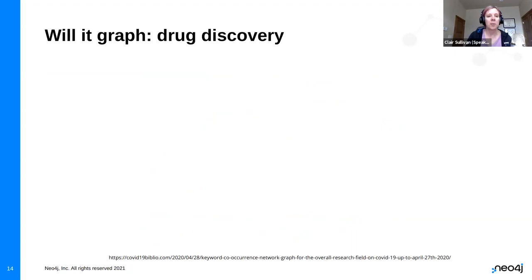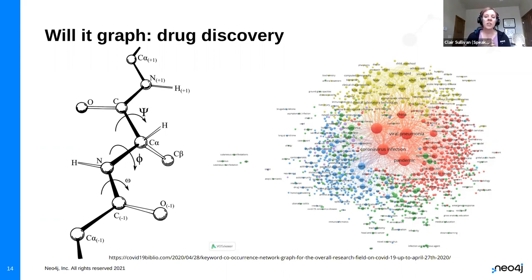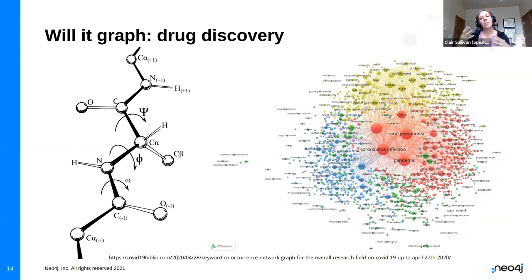Drug discovery — probably not a surprise — yes, it will graph. We have molecules with different atoms connected through other atoms, with different strengths of connections like double bonds between carbon and oxygen, all representable in a graph. Another example: a whole bunch of COVID publications, looking at key words. Around the word coronavirus in the center, you've got pandemic, viral pneumonia, and medications like hydroxychloroquine and corticosteroids — looking at important drugs within this graph could hint at successful treatments.